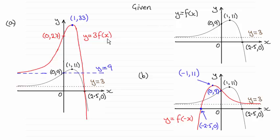And then in part b, the graph of y equals f of minus x. So we also had to show any asymptotes and where it crossed the x and y axis.